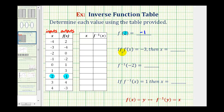Next, we're told that if f of x equals negative three, then determine the value of x. So now this negative three is the output of the function f. So going back to the table, we're looking for negative three in this column here. Here it is. Notice when the output is negative three, the input or x value must be four. So x equals four.